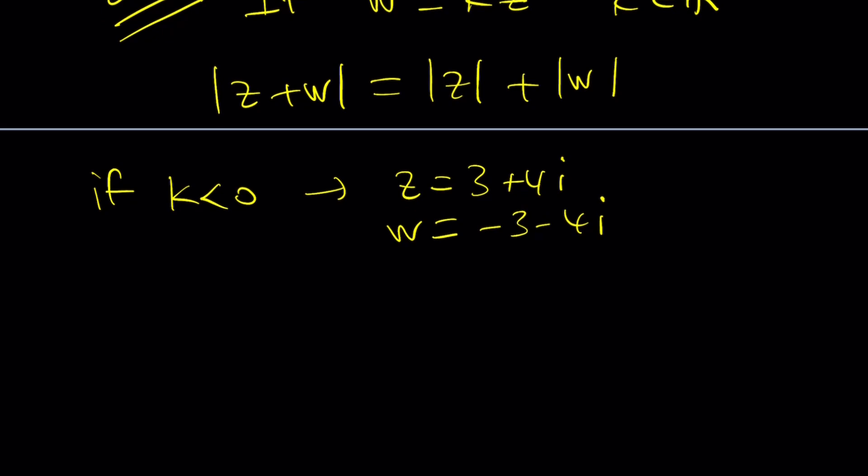And then you're going to notice that Z plus W is 0. Therefore, the equation is not going to be satisfied. So Houston, we have a problem. Because the absolute value of Z plus W is going to be 0,